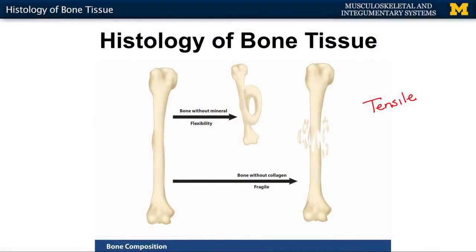You can actually do experiments with bones. If you put a bone in a vat of acid and get rid of all the mineral, you can see how flexible the bone can be — you can actually move it around because all that's left is the organic material, or the collagen fibers. Whereas if you didn't have collagen fibers, you would have a really brittle bone. So equally fragile — you need both components to get a structurally sound bone capable of movement.